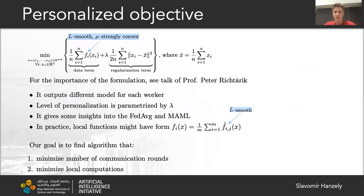Regarding the objective, we will work with the personalized objective. Each worker is allowed to have their own local model x_i. The objective consists of two terms: a data term and a regularization term, which penalizes the similarity of local models. The objective is parameterized by lambda — the bigger lambda, the closer the optimal models are to each other.